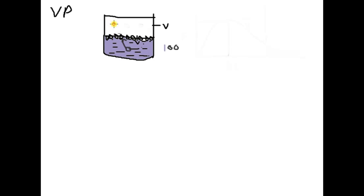So the surface molecule moves into the vapor state. Similarly, more molecules go into the vapor state. When these molecules go into the vapor state, they are not static — they also move within the given volume and can hit back to the surface of the water and stick there. Since we have less vapor, the probability that they will stick is also less. So the rate of change of liquid into vapor is more than the rate of change of vapor into liquid.